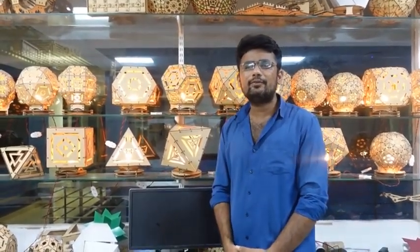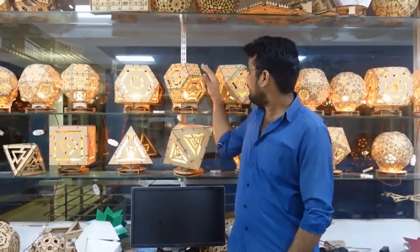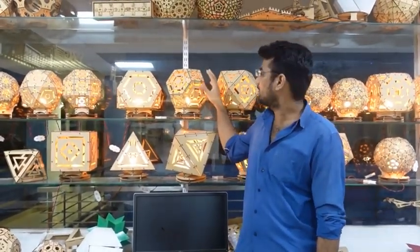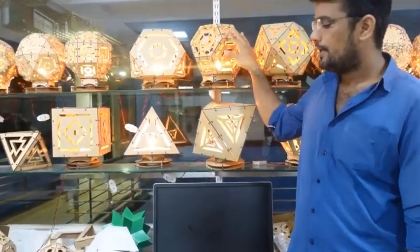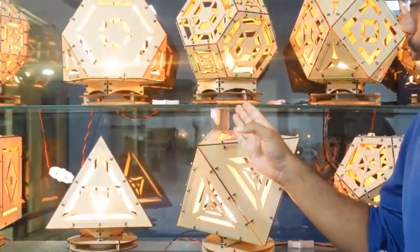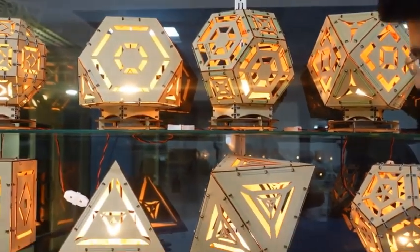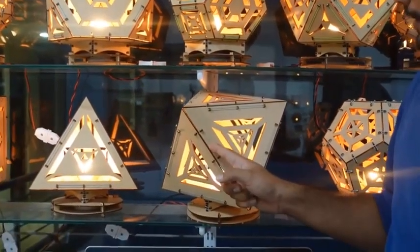Greetings! On the seventh day of the lamp series, we are going to make this lamp. Its name is truncated octahedron. This lamp is made by cutting the vertices. All the vertices are cut at one third of the side of the octahedron.